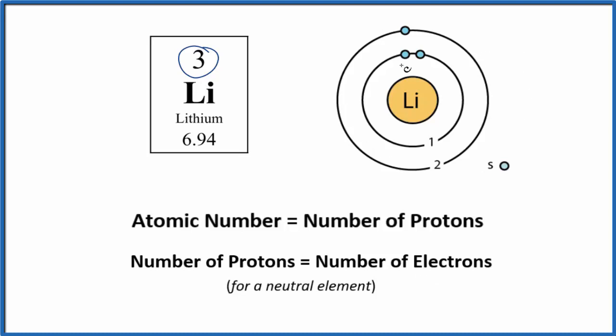So in our Bohr diagram here, we have our nucleus. That has three protons in it. And then we have one, two, three electrons around the nucleus. And they're in energy levels. We have one, two energy levels for the lithium atom.